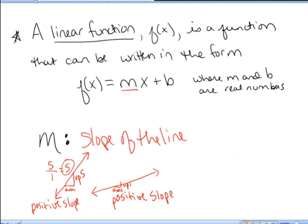That's a positive number, positive five, and it's relatively big — over one, up five — so it's quite steep. Whereas the other line, over one up one, has a slope of one over one, or just one. It's positive because it's going up left to right, but this line on the right is less steep with a slope of one.